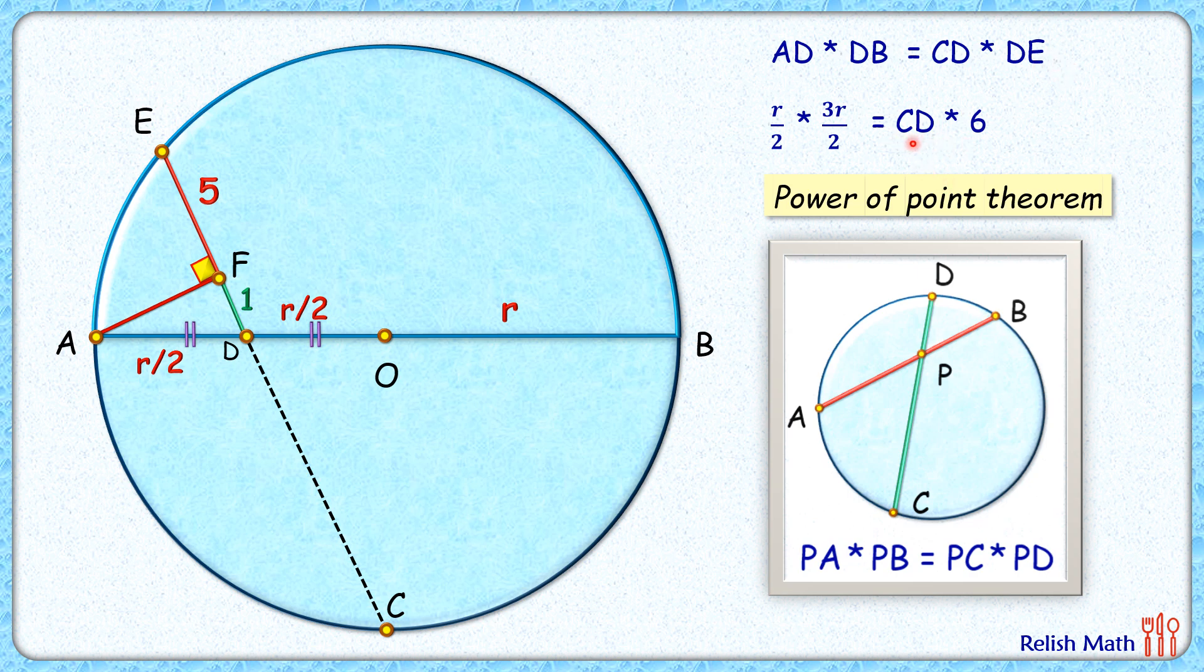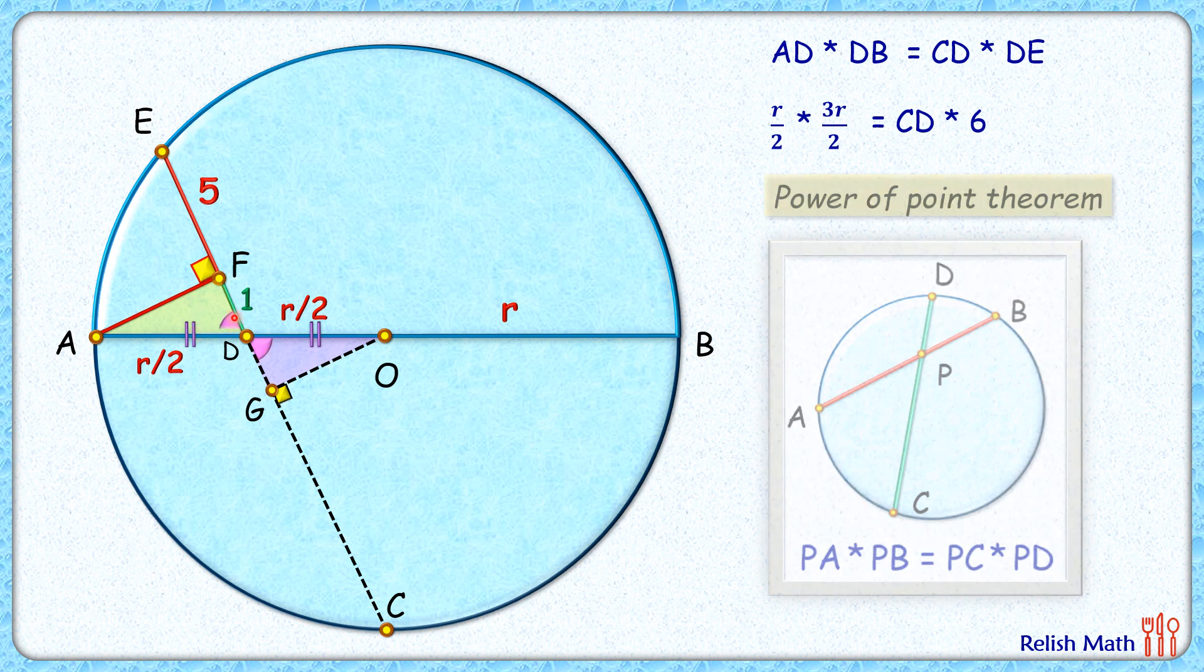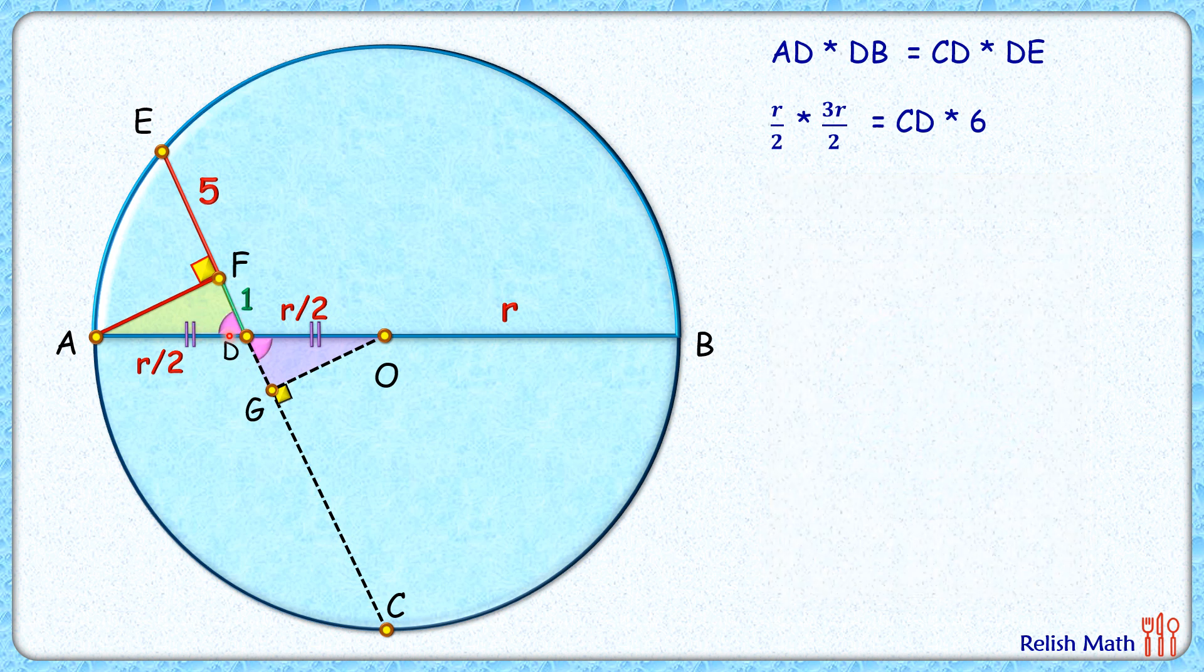To find length CD, let's drop a perpendicular from the center of the circle on this chord. Now if you look carefully, this pink triangle and this yellow triangle both have these angles equal because these angles are vertically opposite angles. They have this hypotenuse length equal to r/2, and this 90-degree angle is there in both of them.